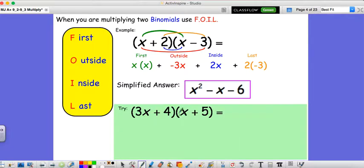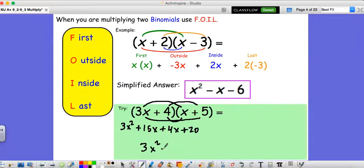So if you'd like, go ahead and pause this video and try this next one on your own. 3x plus 4 times x plus 5. I will do it in a moment. Okay, so here we go. We have our first terms, 3x times x. That's just 3x squared. 3x times x is 3x squared. Then we have our outside terms, 3x times 5. Well, that's just 15x. Then we have our inside terms, 4 times x. That's just 4x. And then we have our last terms, 4 times 5. That's just 20. So simplifying, we have 3x squared plus 19x plus 20.